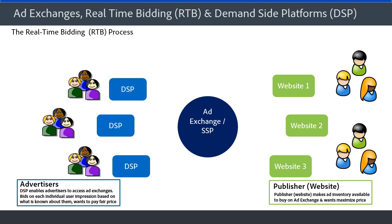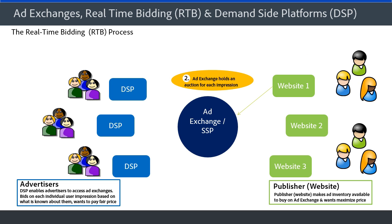Let's start with a quick overview from Part 1. Here's how real-time bidding works with the ad exchanges and demand-side platforms. Publishers want to make their ad inventory available for advertisers to buy on the ad exchange, and they want to maximize the price they can get for it. Advertisers work with DSPs, and DSPs enable advertisers to access the ad exchanges. The DSPs bid on each individual user impression based on what is known about them, and they want to pay a fair price for that impression. So when a user comes to a website — looking at the right side of the screen — before the content and ad loads, an ad call is made to the ad exchange.